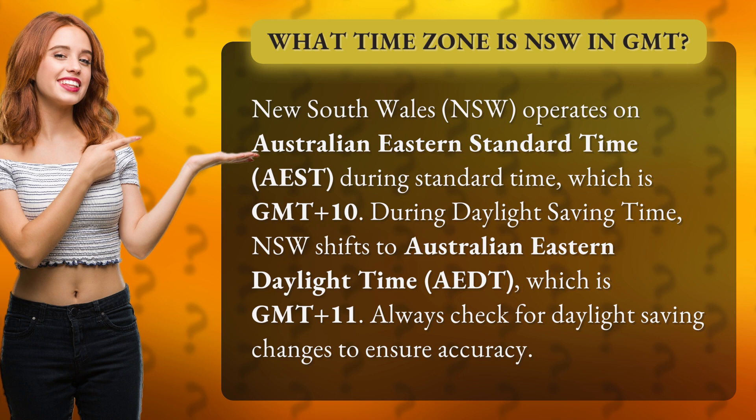During Daylight Saving Time, NSW shifts to Australian Eastern Daylight Time, AEDT, which is GMT+11. Always check for daylight saving changes to ensure accuracy.